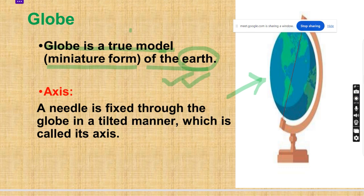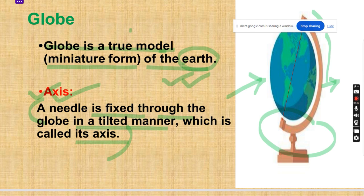Now this thing we can see in our globes right, this brown part we can see, this part I am also marking over there, this part, so what it is, that is called the axis. What is axis? The definition is also given over there: a needle is fixed through the globe in a tilted manner which is called an axis. So a needle which is already fixed with the globe, and in a tilted manner, the tilted manner that means it's little bit slanting way, and which is called the axis. So two definitions we have learned from the first page of this PPT.